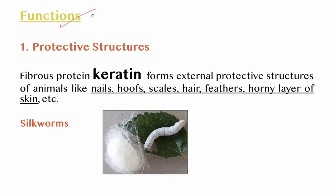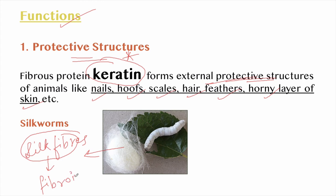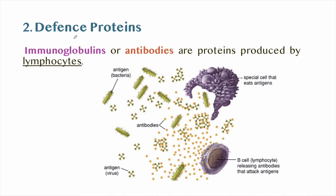Now let us look at the functions of proteins. First is protective structures. Keratin is an important fibrous protein that forms external protective structures of animals — for example, nails, hooves, scales, hair, feathers, and the horny layer of skin. Silkworms protect themselves in the cocoon stage by silk fibers, which are built up of the protein fibroin. Spider webs are also made up of proteins.